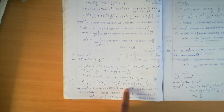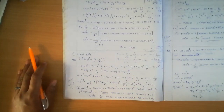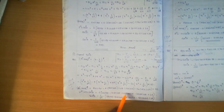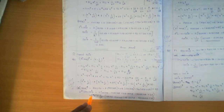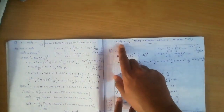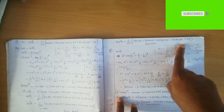We check: 2i sin theta the whole raised to 8 equals 2 cos 8 theta minus 8 times 2 cos 6 theta plus 28 times 2 cos 4 theta minus 56 times 2 cos 2 theta plus 70. Taking 2 common throughout, sin raised to 8 theta equals 1 by 2 raised to 7 times cos 8 theta minus 8 cos 6 theta plus 28 cos 4 theta minus 56 cos 2 theta plus 35.